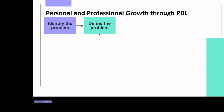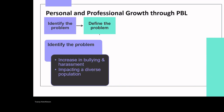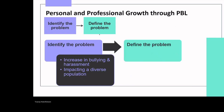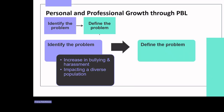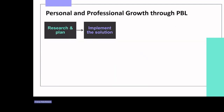In their groups, teachers identify the problem: an increase in bullying and harassment impacting a diverse population. They then define the problem in more detail. Examples here are that British values are not respected and followed, a lack of awareness or empathy, and even defining what British values means.